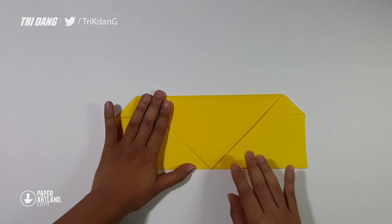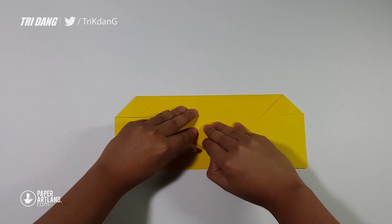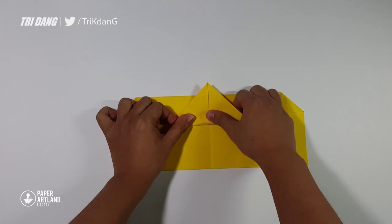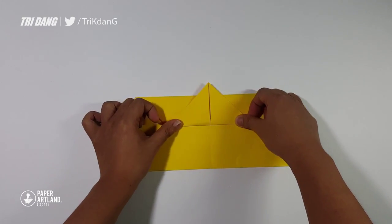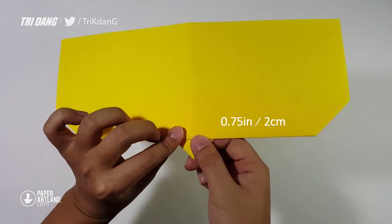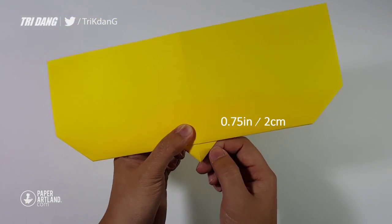And next step, I will fold this tip up like this. I will fold it up a little bit more. You can see the distance from the tip here to this edge is about three-fourths of an inch.